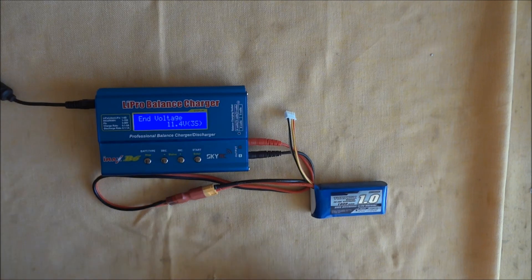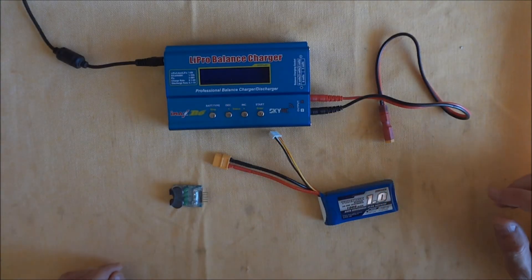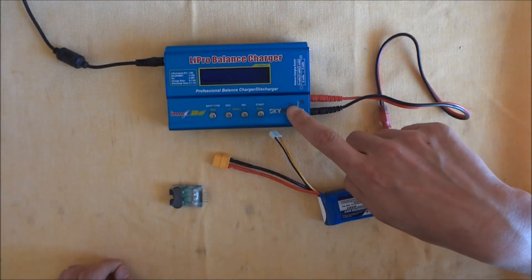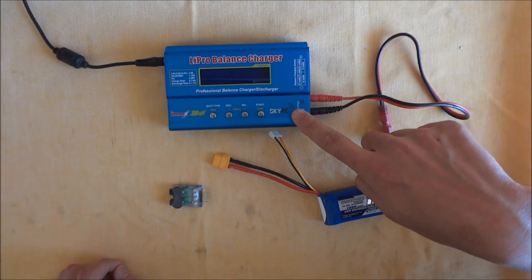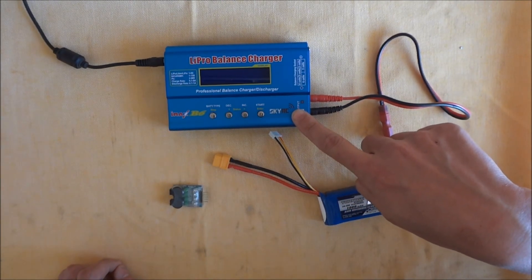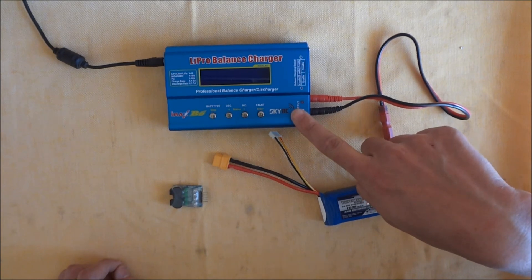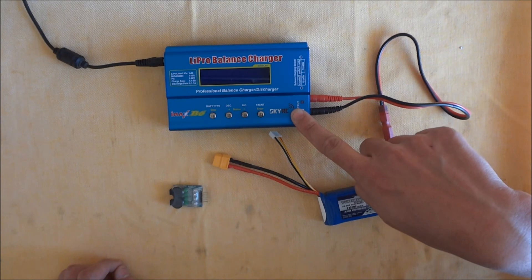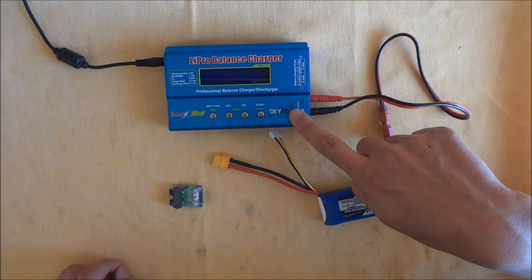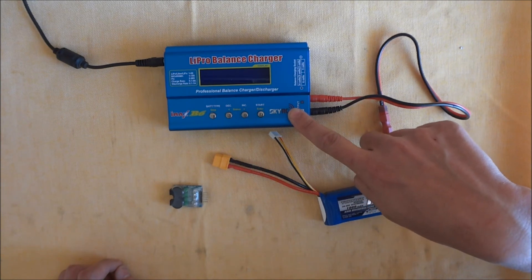Just a couple of other things to mention, the IMAX B6, there is quite a few copies around, rip off copies of these. I definitely recommend getting the genuine IMAX B6. So just be aware, there are copies around, they're a little bit cheaper, so get the genuine one, it's only a few dollars more, and you know you're getting a quality product.